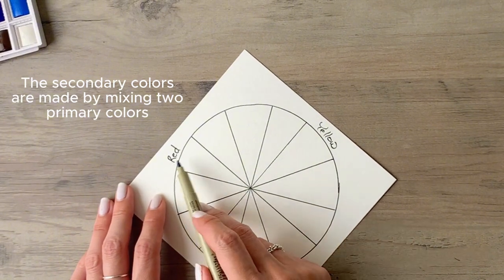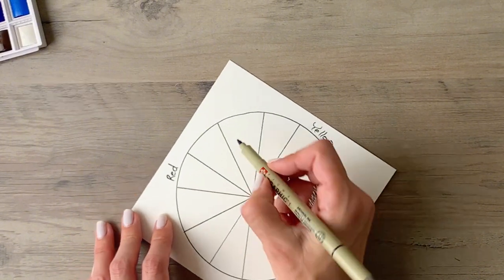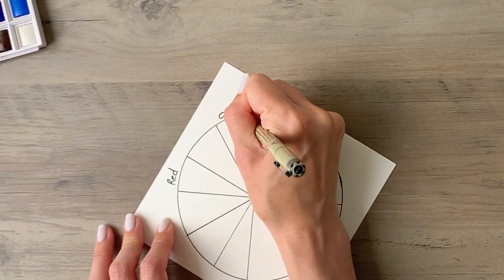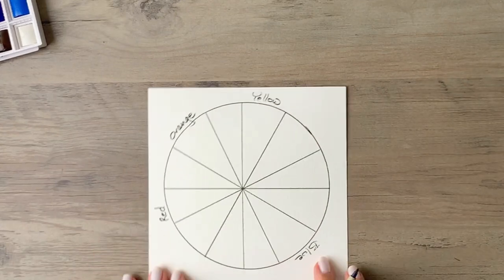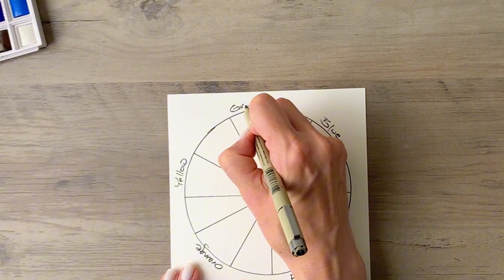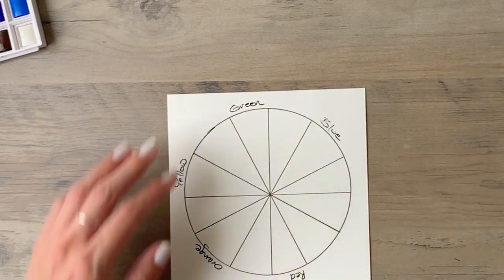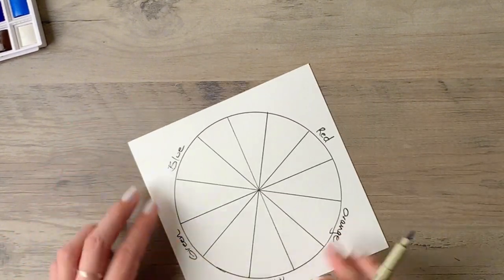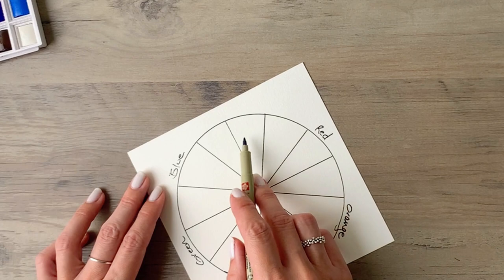And then we'll put the secondary colors. Red and yellow will make orange. You could also put an S on this label if you want to remember that it's a secondary color. The next one will be yellow and blue making green. And then lastly, you'll have blue and red, which will make violet.